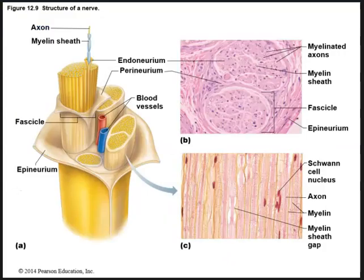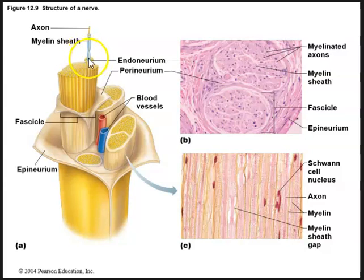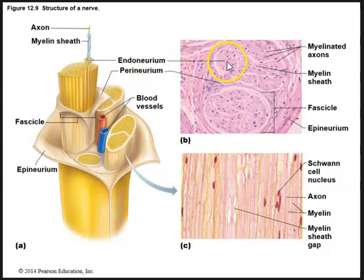The outermost layer surrounding all these fascicles is the epineurium. Epi being the outermost layer — the whole nerve is surrounded by a tough fibrous sheath. So we have one axon here with its myelin sheath made up of Schwann cells surrounding the axon, and the connective tissue covering of the axon and the Schwann cells is the endoneurium.